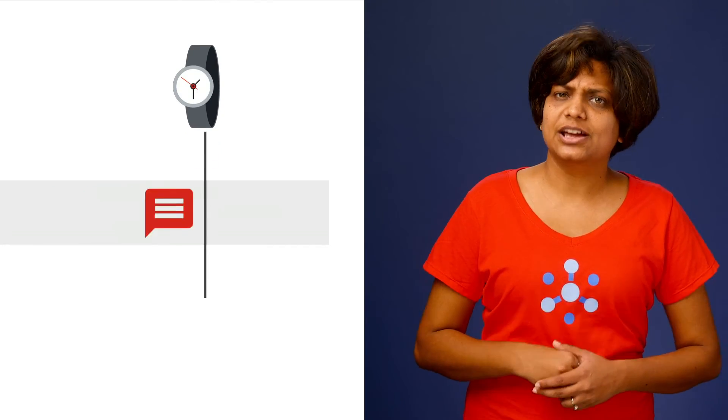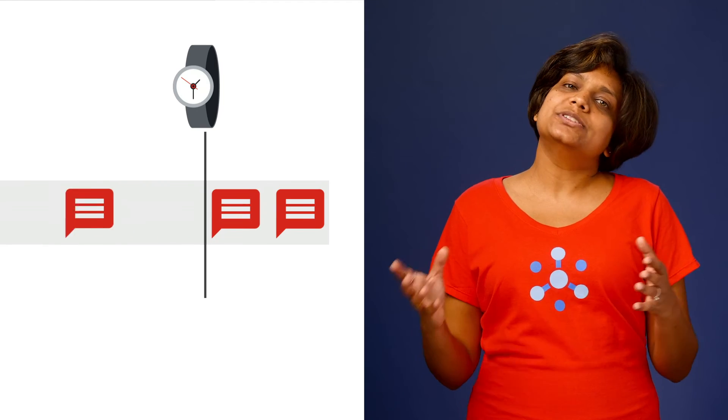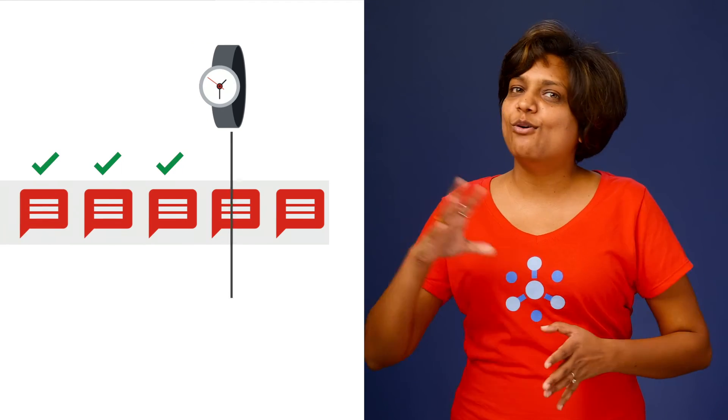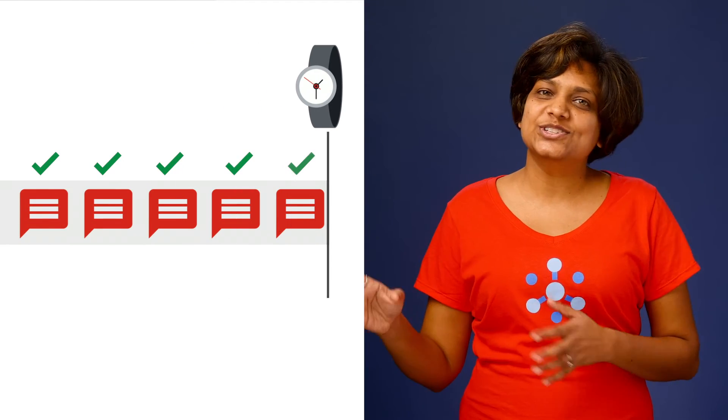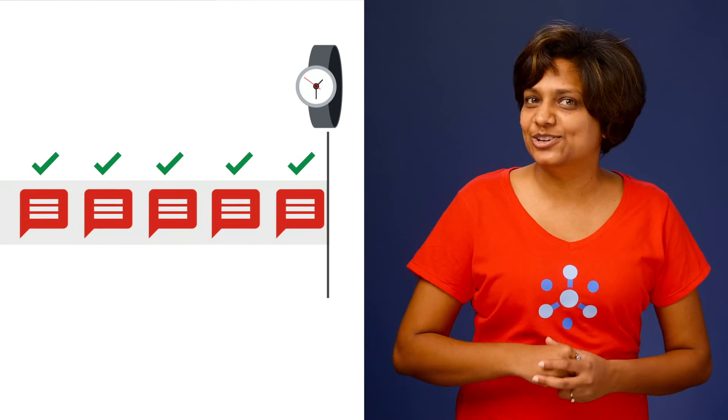That was replaying messages — what about discarding? What if CatOut wants to save on processing time and cost on backlogged messages that are no longer relevant? In situations like that, you can purge or discard those messages — just seek to a time in the future, and all those messages will be considered acknowledged.